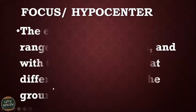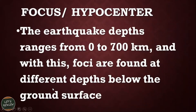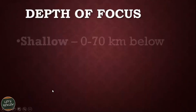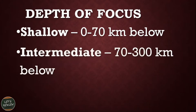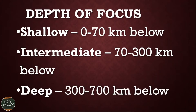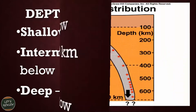Let's look at the measurements. The earthquake depth ranges from 0 to 700 kilometers, and the foci are found at different depths below the ground surface. We consider it a shallow focus if the depth is 0 to 70 kilometers below, intermediate if it is 70 to 300 kilometers below, and deep if it measures 300 to 700 kilometers below the ground.